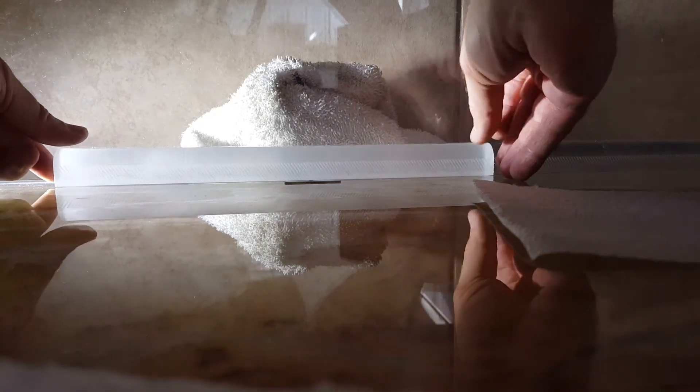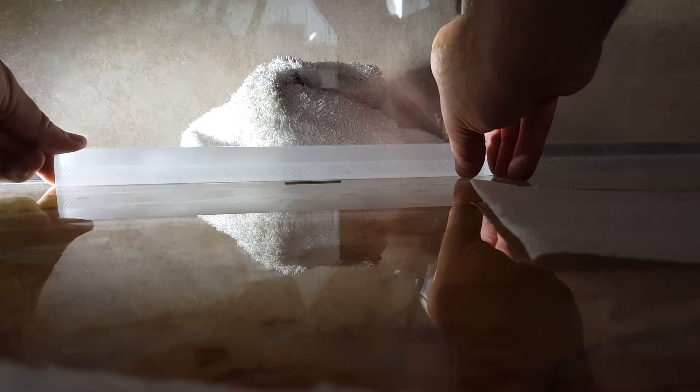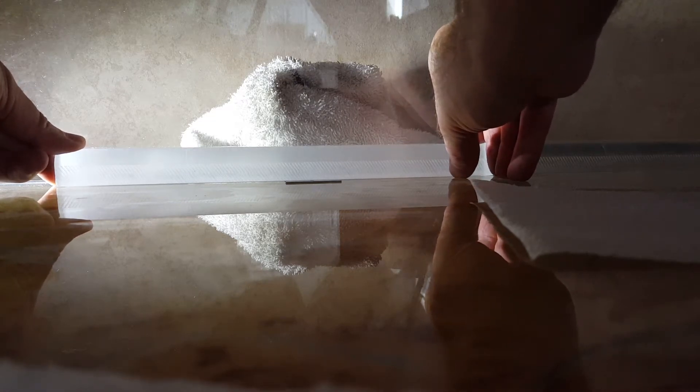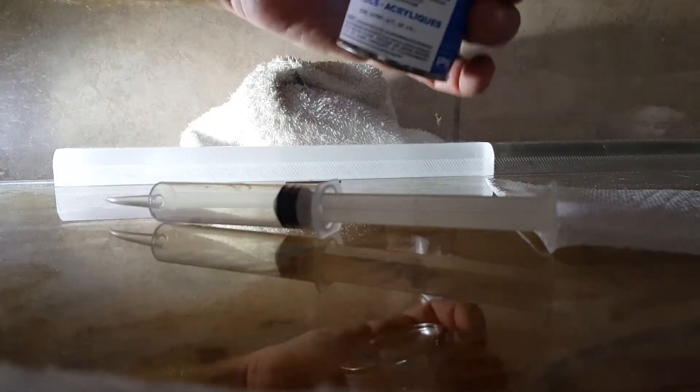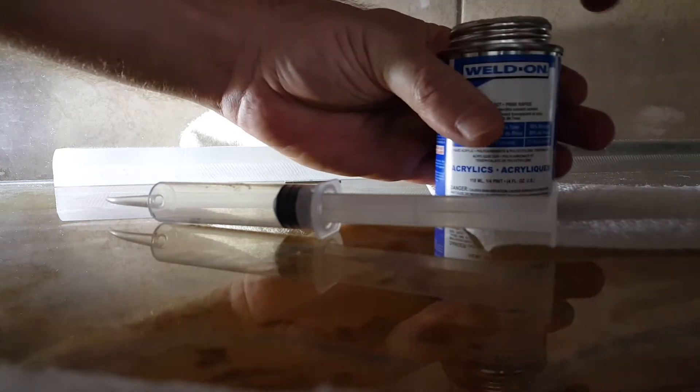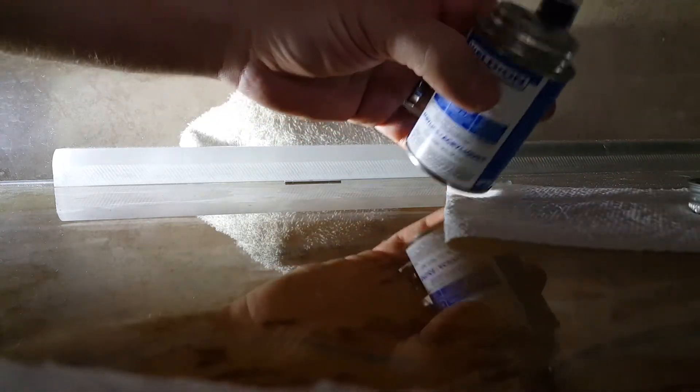When you're using weld-on products, put a little space between the other surfaces, take your weld-on, and put it in your syringe.